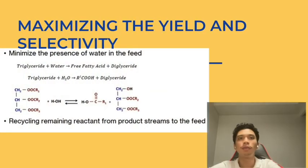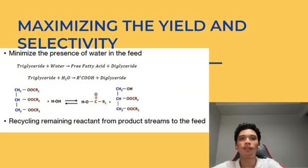After that, it is about maximizing the yield and selectivity of the biodiesel. To maximize the selectivity, we can minimize the composition of water in the feed, as you can see in the reaction. The side reaction that might occur happens under the presence of water. Besides that, recycling the remaining reactants from product stream to the feed can also help in increasing the yield, as it ensures more reactants experience the reaction process.